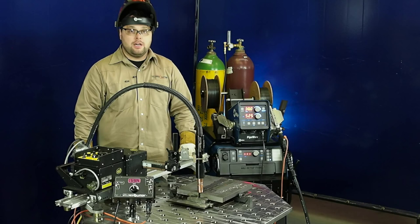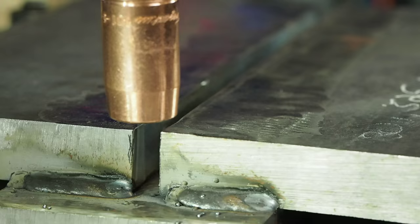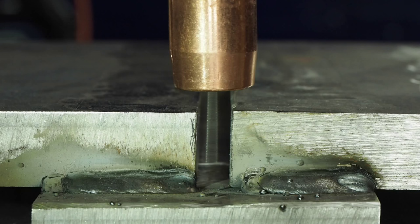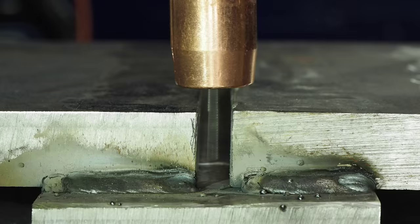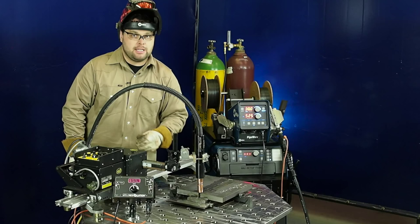All right, now we're ready to weld. What I have set up is a one-inch thick plate with a three-eighths inch groove. There's been no bevel prep. We'll be welding onto a steel backing plate. So we'll be filling up a three-inch wide groove all the way from root to cap. I've made sure that my settings on my torch are correct.